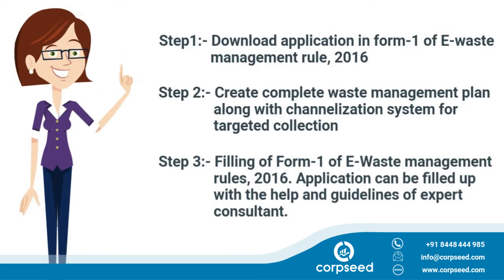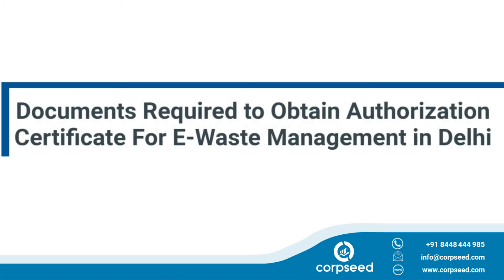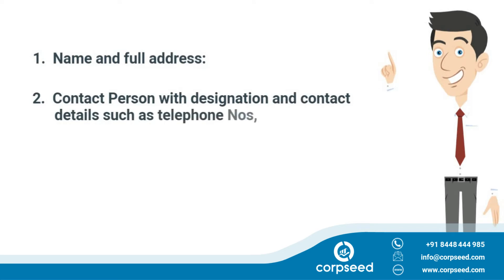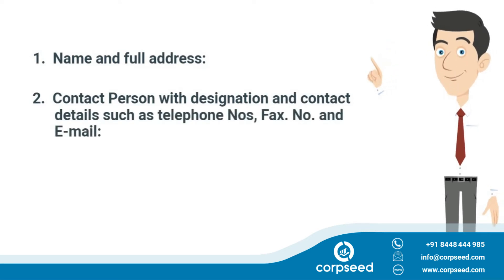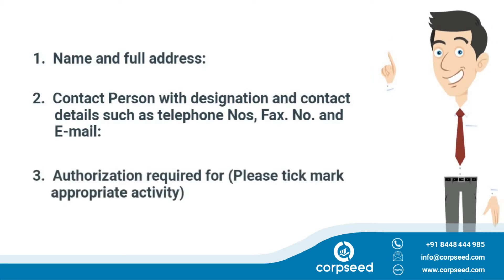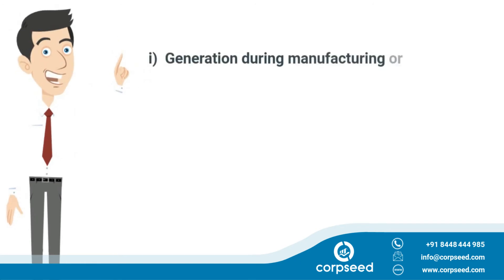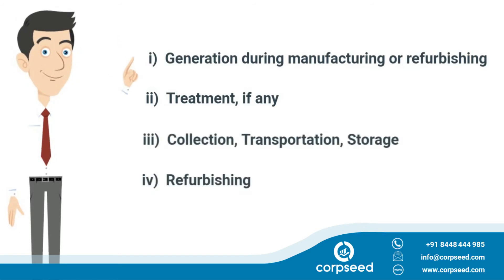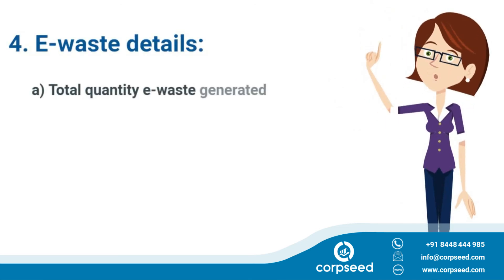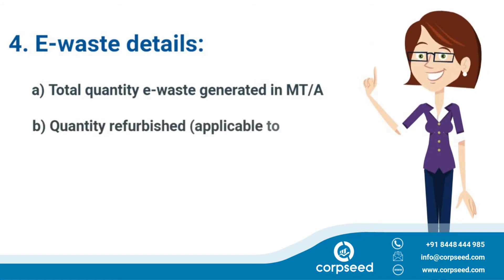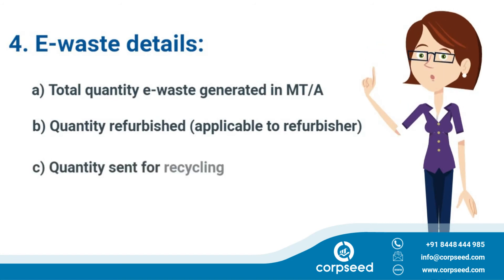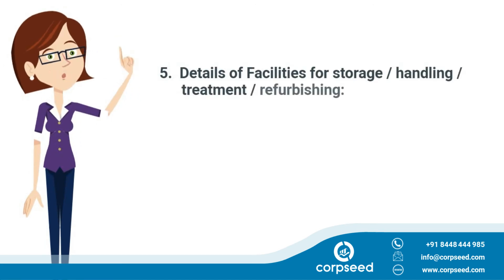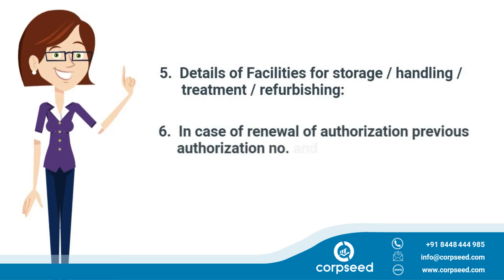Documents required to obtain an authorization certificate for e-waste management in Delhi include: name and full address, contact person with designation and contact details such as telephone, fax number, and email. Authorization is required — please tick-mark the appropriate activity: generation during manufacturing or refurbishing, treatment, collection, transportation, storage, refurbishing. E-waste details include total quantity of e-waste generated per month, quantity refurbished, quantity sent for recycling, quantity sent for disposal, details of facilities for storage, handling, treatment and refurbishing, and in case of renewal — previous authorization number, date, and details of annual returns.